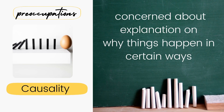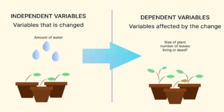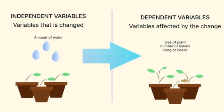Now let's go to the second major preoccupation, which is causality. It is concerned with explanation of why things happen in certain ways. This is why most quantitative research have independent and dependent variables to explain why and how one variable affects the other.